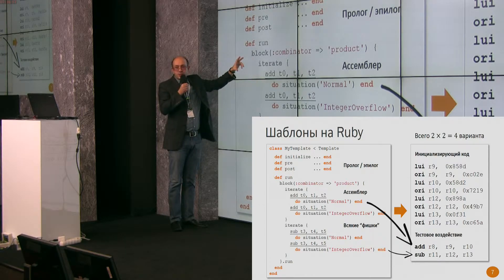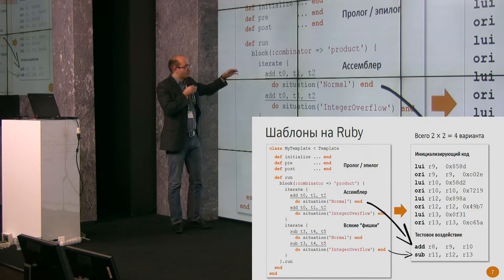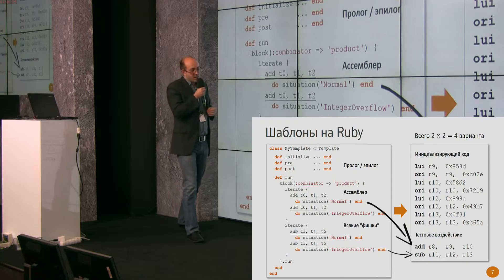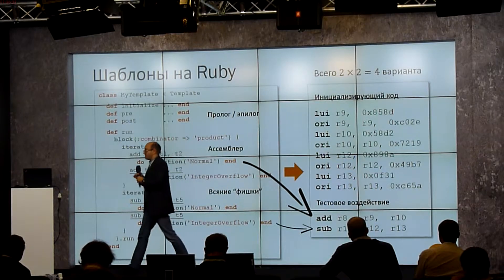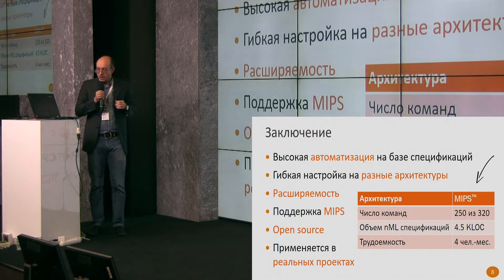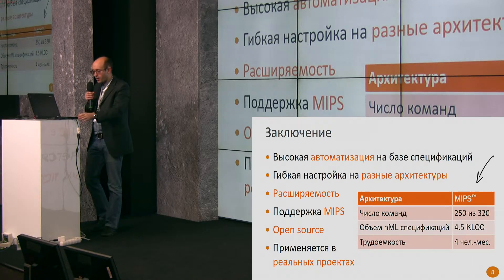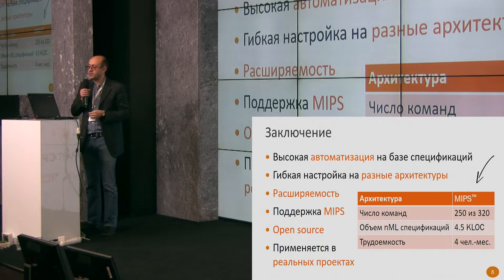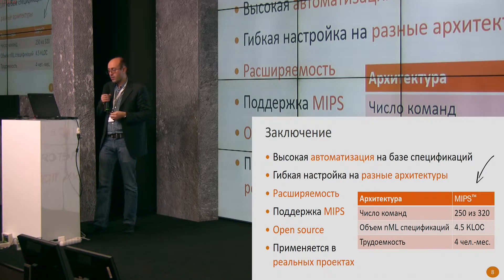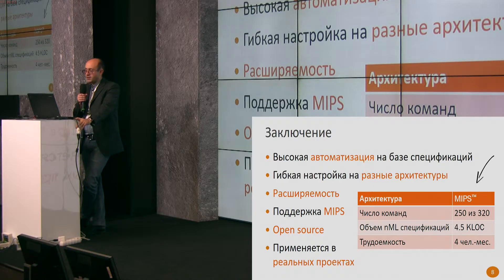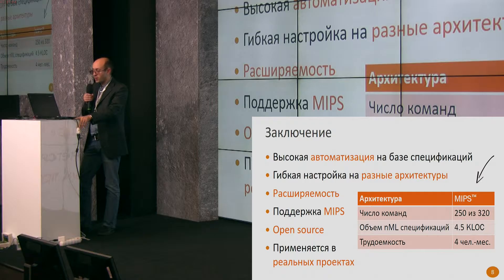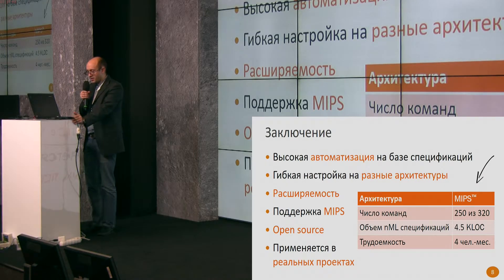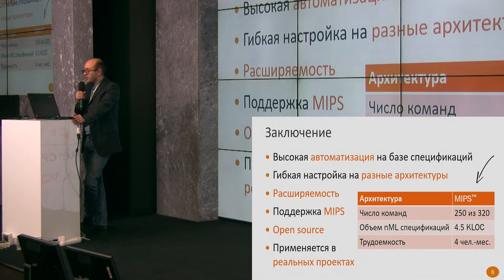For example, a block contains two sub-blocks, each iterating one element sequence. The outer block tells what to do — Cartesian product — so there are four sequences for each of which tests are built. Test data is generated and then initializing code is generated. In conclusion, using formal specifications allowed us to achieve a high level of automation of verification. Formal specifications allow flexibly tuning the generator for different architectures — to identify the specification and verify the command system. It is expandable and scalable; additional test generators and other components can be included.